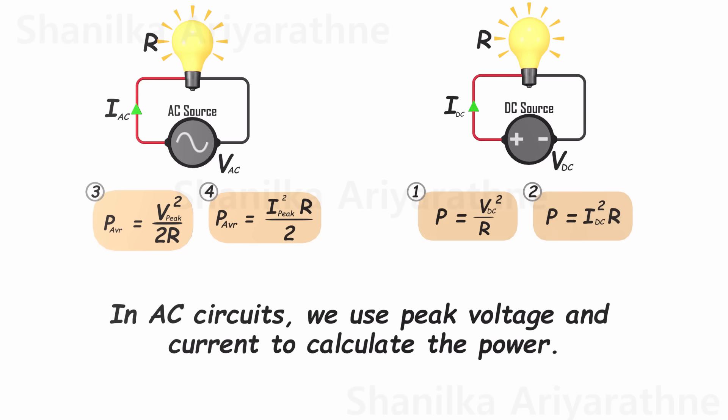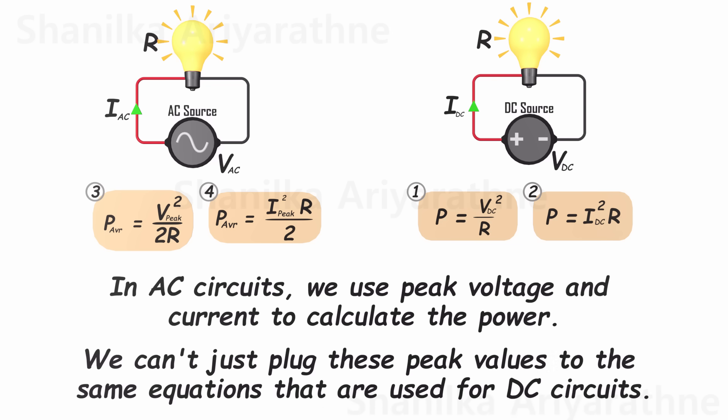These are the methods to calculate power in AC and DC circuits. In AC circuits, we use peak voltage and current. But here's the catch. We can't simply plug these peak values into the same formulas we used for DC circuits. We have to derive separate equations for AC, as demonstrated here.